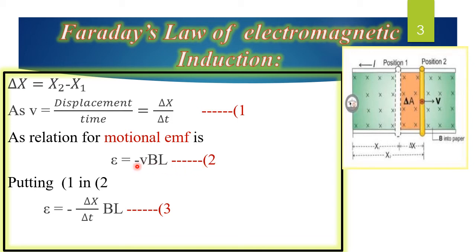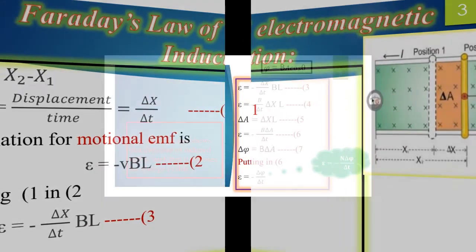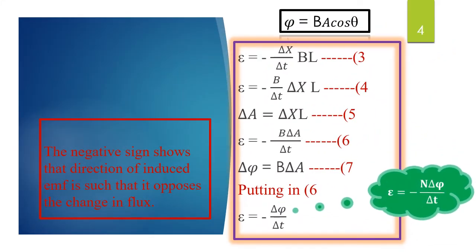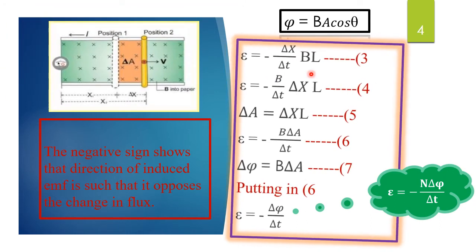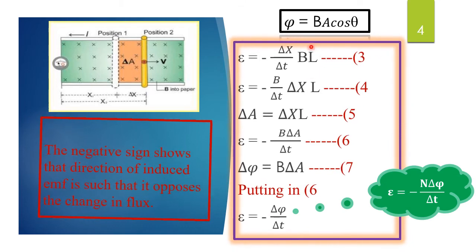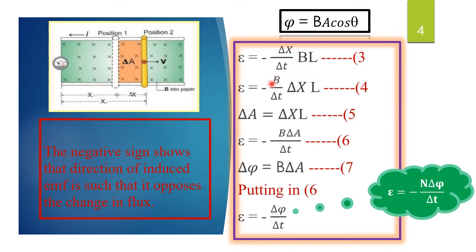In this equation, V is the velocity. In equation 1 we defined velocity, so in equation number 2, when we put the value of velocity in place of V: E is equal to minus delta x over delta t, multiplied by BL. So equation number 3 is: E is equal to minus delta x over delta t into BL.